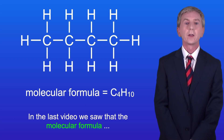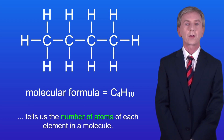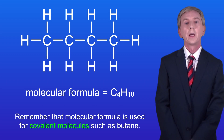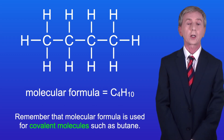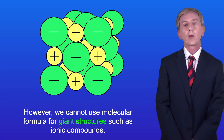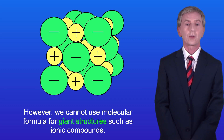In the last video we saw that the molecular formula tells us the number of atoms of each element in a molecule. Remember that molecular formula is used for covalent molecules such as butane. However we cannot use molecular formula for giant structures such as ionic compounds.